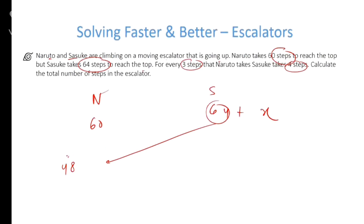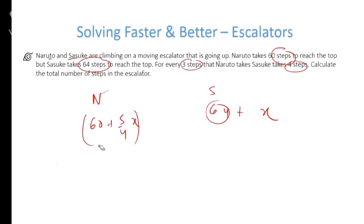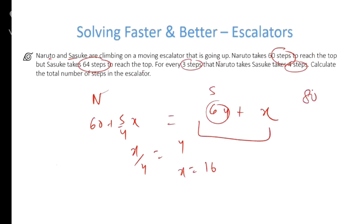But Naruto is actually taking 60 steps, which is 5/4 times 48, so the escalator also takes 5/4 times the original. The total number of steps is the same so equating gives x/4, then 4x = 16, so total steps = 80.